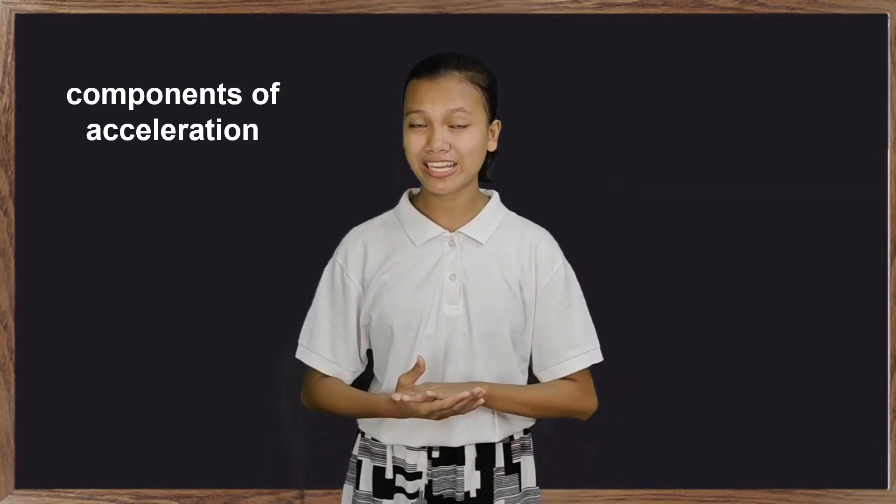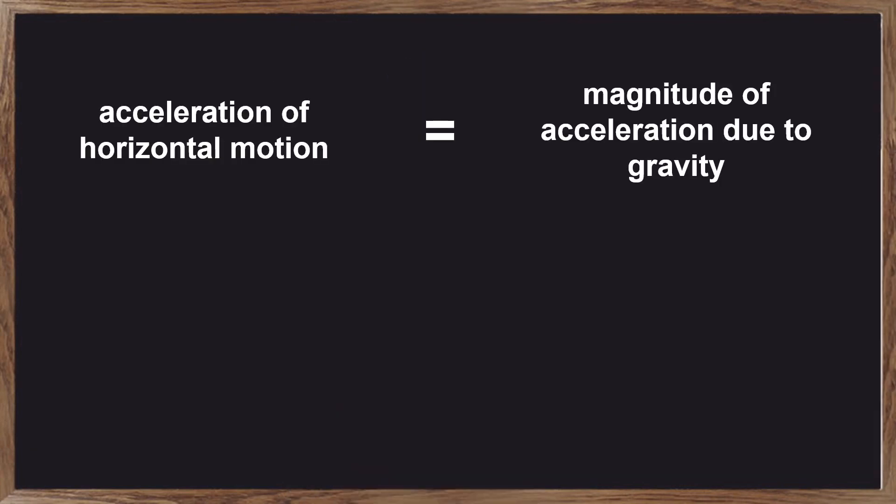The components of acceleration are very simple. The acceleration of horizontal motion is equal to the magnitude of acceleration due to gravity, which is equal to negative 9.8 meters per second squared. Since the stone's direction is downward, the sign must be negative.